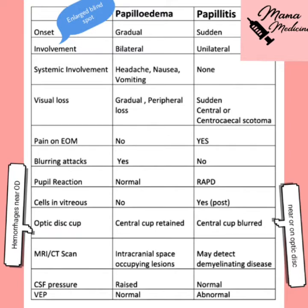A very high-yield and important concept: in papilledema there is a gradual loss of vision, whereas in papillitis there is a sudden loss of vision. This is because in papilledema there is gradual enlargement of the blind spot, whereas in papillitis there is a central scotoma.